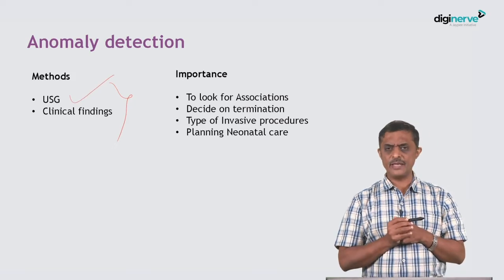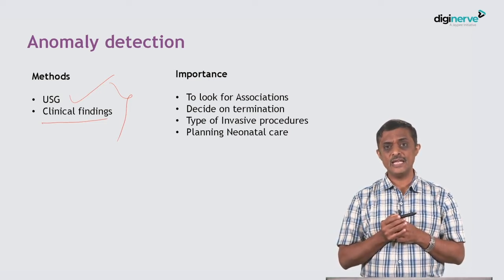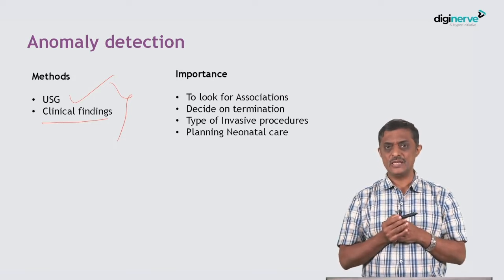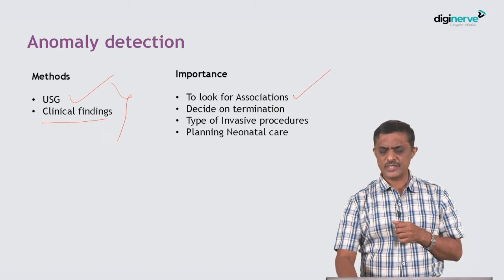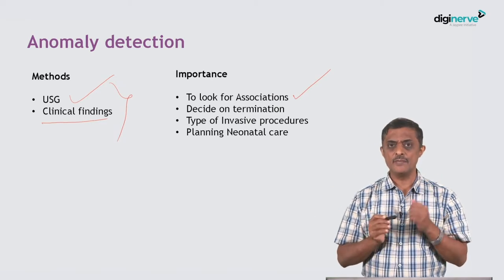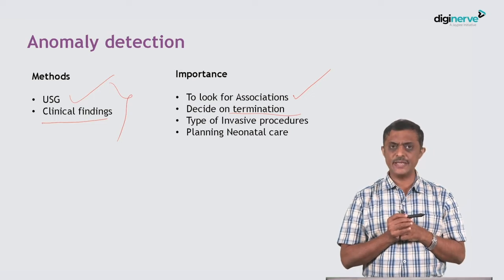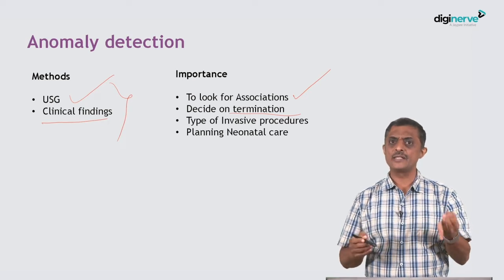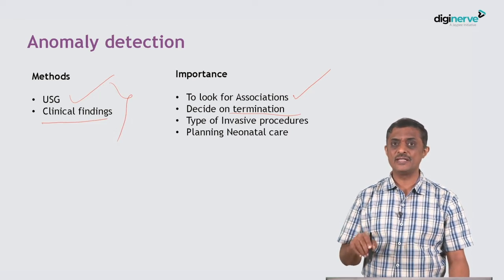Anomaly detection is usually done by ultrasound, and sometimes clinical findings may give you a clue — for example, a huge polyhydramnios at 16 weeks should make you think about neural tube defects or duodenal atresia. Ultrasound evidence helps look for associations; for instance, is a cystic hygroma associated with Turner's syndrome? You can consider termination based on detected anomalies, decide the type of invasive procedure needed to confirm or treat the anomaly, and plan neonatal care — for example, feeding practices for a baby with cleft lip.